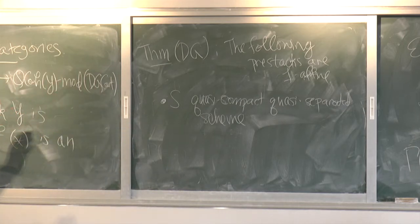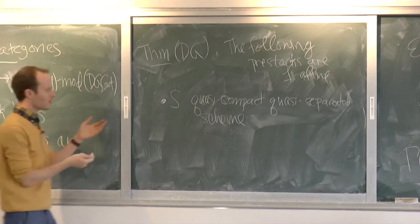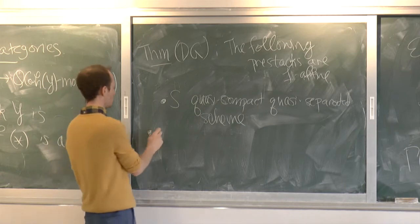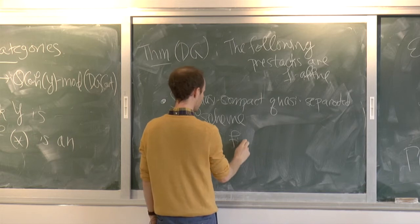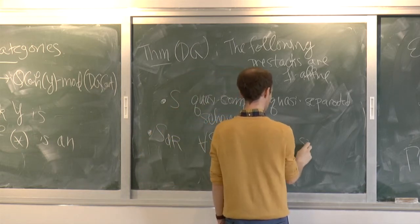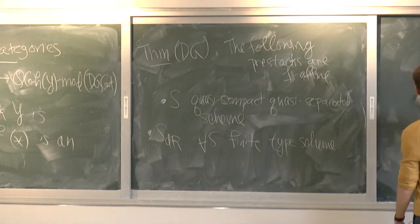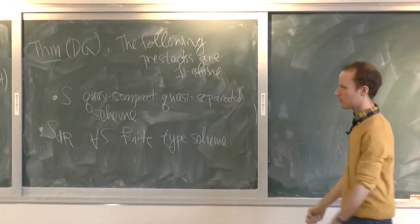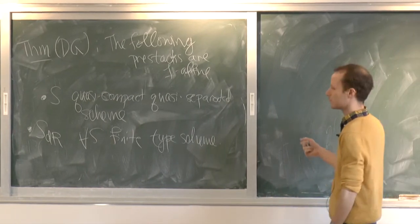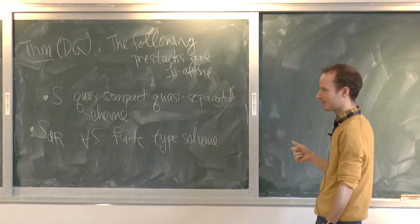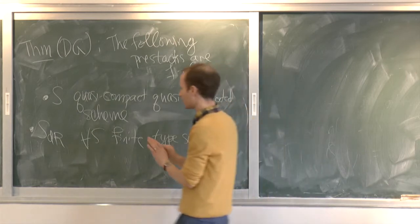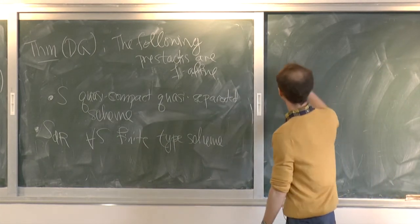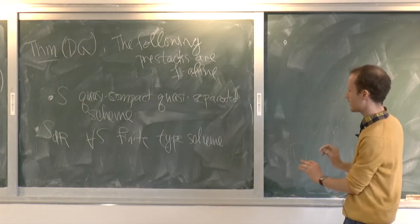Another example that is 1-affine is S_{dR} for any finite-type scheme S over k in characteristic zero. Dennis also proves this for various algebraic stacks, but it's a more complicated statement. So BG satisfies 1-affineness. BG_{dR} will not—that will be discussed during the tutorial.